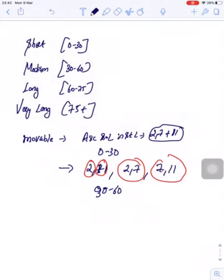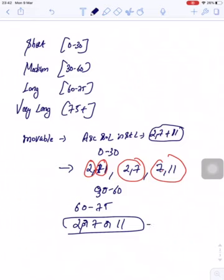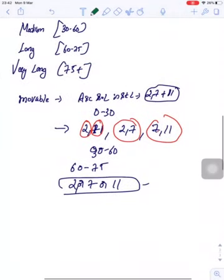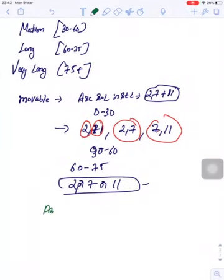In case for long life, that is above 60 and within 75, it should signify only one maraka or only badaka - either only 2, or only 7, or only 11. When this condition exists then it is 60 to 75. For above 75 it should not signify any of this.